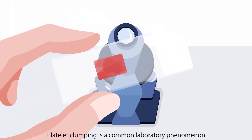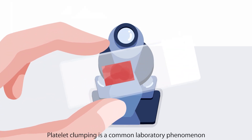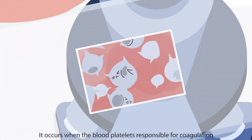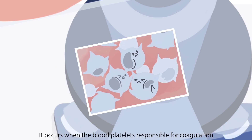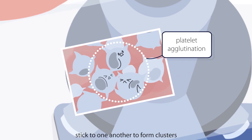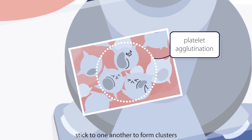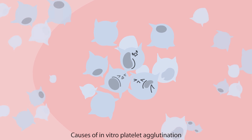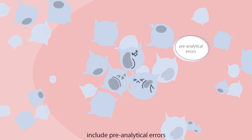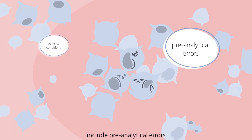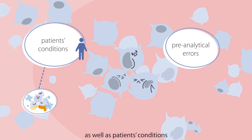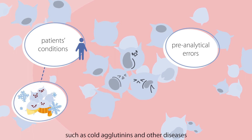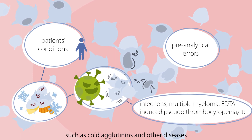Platelet clumping is a common laboratory phenomenon. It occurs when blood platelets responsible for coagulation stick to one another to form clusters. Causes of in vitro platelet agglutination include pre-analytical errors as well as patients' conditions, such as cold agglutinins and other diseases.